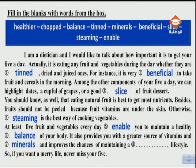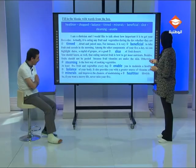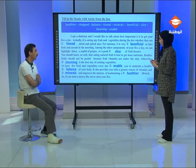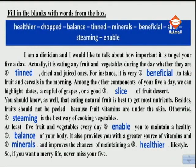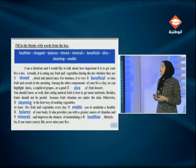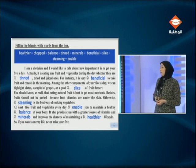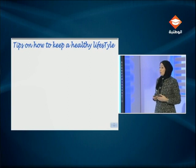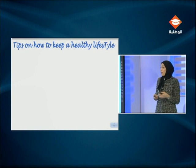Eating at least five fruit and vegetables every day also provides you with a greater source of vitamins and minerals and improves the chances of maintaining a healthier lifestyle. By the way, vitamins and minerals are words that collocate together. Both British and American pronunciations — 'vitamins' or 'vitamins' — are correct. It is important to have a healthy lifestyle and to eat healthy food.